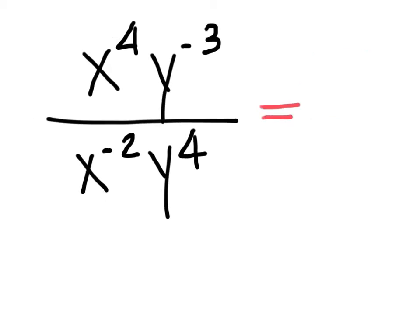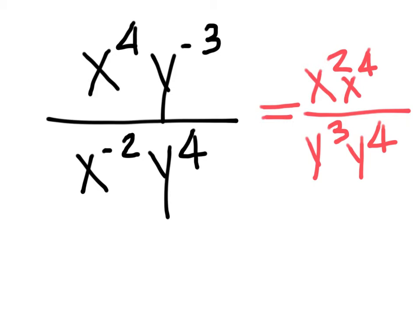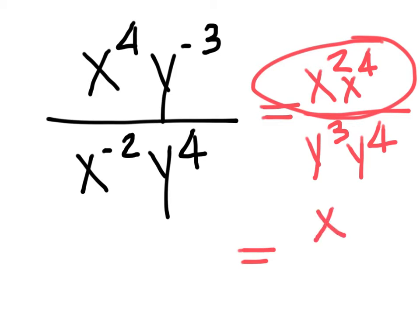The next problem: after handling negative exponents, you get x squared on top, x to the fourth on the bottom, y to the third on the bottom, and y to the fourth on the bottom. Simplifying: x squared times x to the fourth would be x to the eighth by adding exponents, and y to the third times y to the fourth is y to the seventh. So the final answer is x to the seventh over y to the seventh — wait, that's adding x to the second and x to the fourth to get x to the sixth; the answer is x to the seventh over y to the seventh.